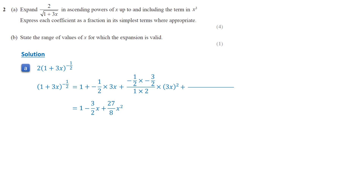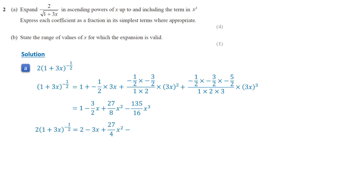The fourth term is the product of negative half, negative 3 half, and negative 5 half, divided by 1 times 2 times 3, multiplied by (3x) cubed, which equals negative 135 over 16 times x cubed. Since the original expression is multiplied by 2, we multiply the entire expansion by 2. This simplifies to 2 minus 3x plus 27 over 4 times x squared minus 135 over 8 times x cubed.